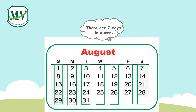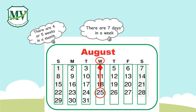When we want to find a day or date, we look for the date and see under which day column it falls. For example, we find the 25th of the month. This year, it falls on Wednesday. There are 4 or 5 weeks in a month.